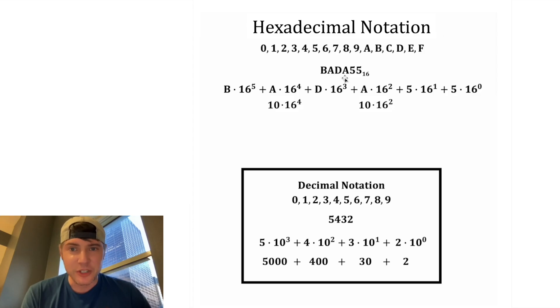So these two A's will both be equal to 10. This B would be equal to 11. And this D would be equal to 13. So let's calculate this number. 16 to the 0 is 1, so 5 times 1 is 5. And then this is 5 times 16, which is 80. And this is 10 times 16 squared. So 16 squared is 256, and then we multiply that by 10 to get 2,560.